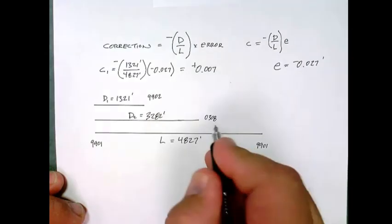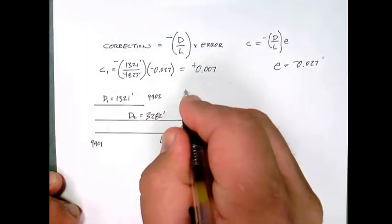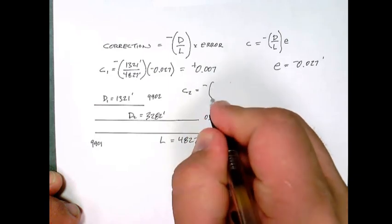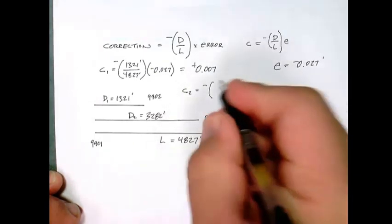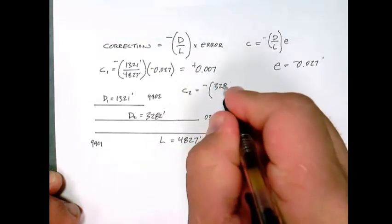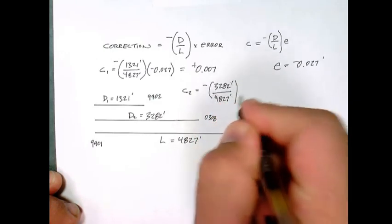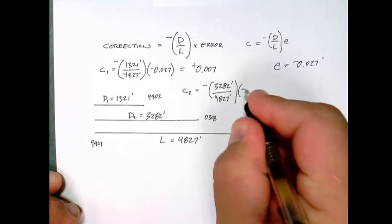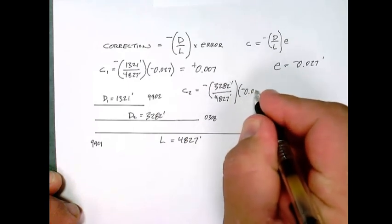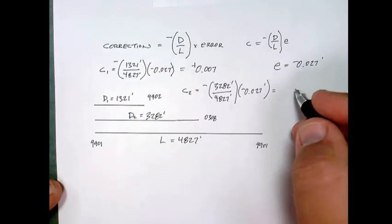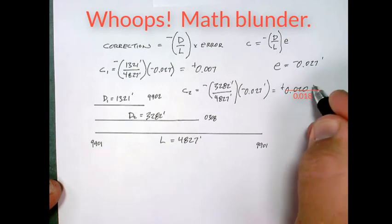Let's also calculate it for 0308 using distance two. So the correction two will be the negative of 3282 feet divided by 4827 feet times our negative 0.027 feet and this gives us a result of 0.020 feet.